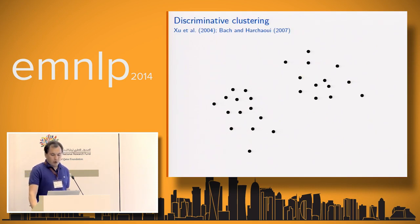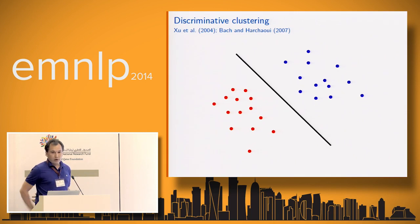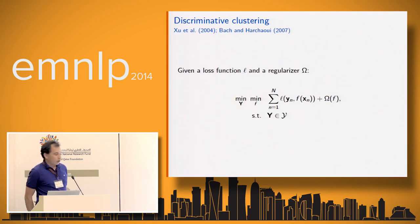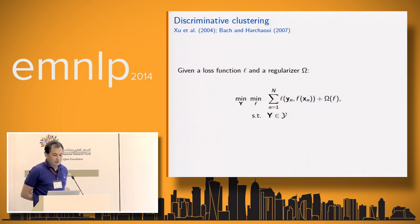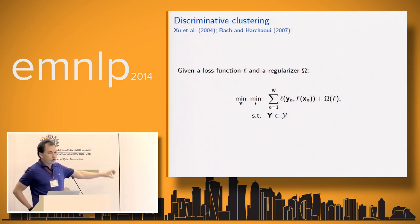Given a set of points you'd like to cluster them, and the criterion used is that the clustering obtained can be used to train a supervised classifier that attains a very low classification error. Given a loss function L and a regularizer omega, the problem of discriminative clustering can be formulated as finding the best clustering Y and the best corresponding classifier F leading to the smallest empirical risk. We put constraints on the clustering using distance supervision.